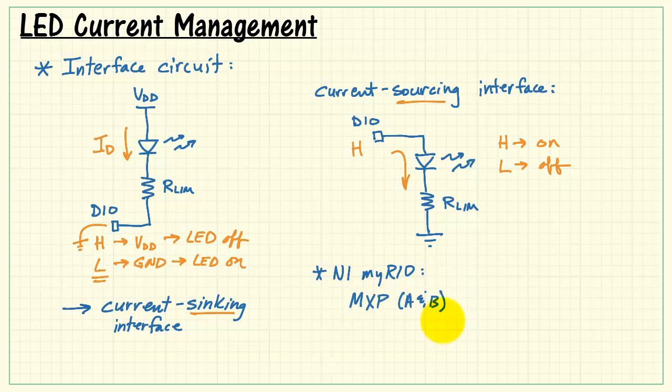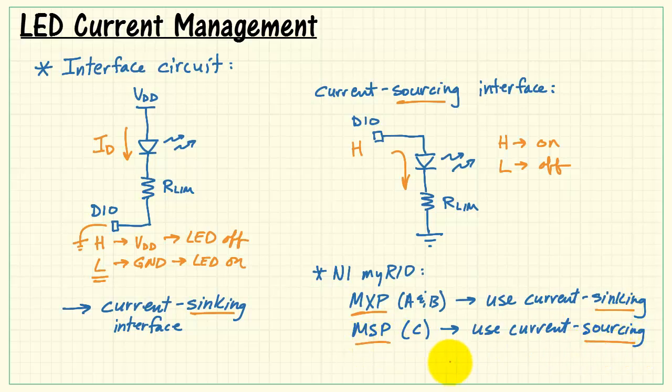Now, specifically for NI MyRIO, on the MXP connectors, which are A and B, we want to use the current sinking form of the interface circuit. Then on the MSP port, connector C, we want to use the current sourcing version. MXP is sinking. MSP is sourcing. The question is, why, and what's the difference between the two?